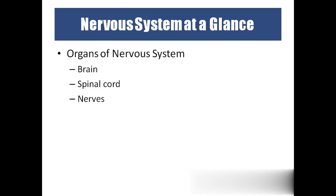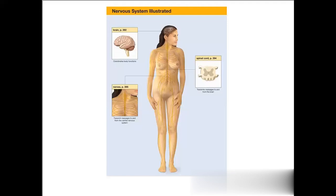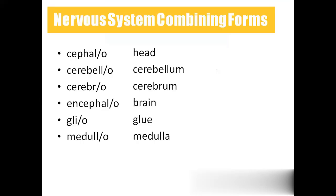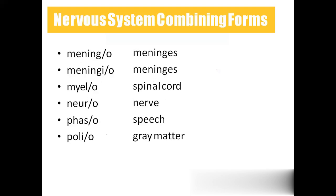Other than the brain and spinal cord, we call everything else the peripheral nervous system. Coming to the combining forms: cephalo means head; cerebello means cerebellum; cerebro means cerebrum; encephalo means brain; glio means glue or pasting; medulo means medulla; meningeo means meninges, which are the coverings of the brain and spinal cord; myelo means spinal cord; neuro means nerves; phaso means speech; and polio means gray matter.